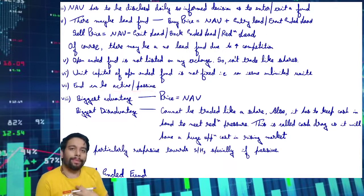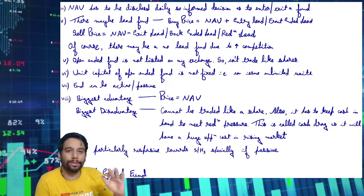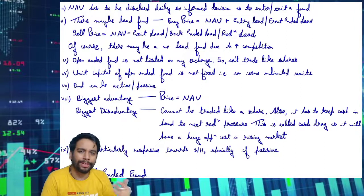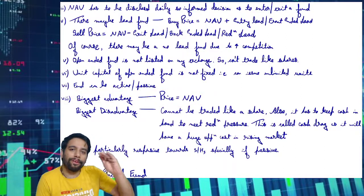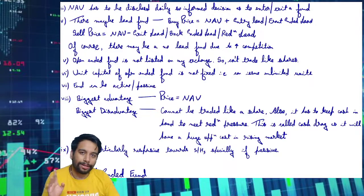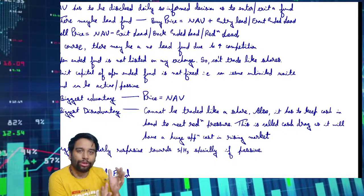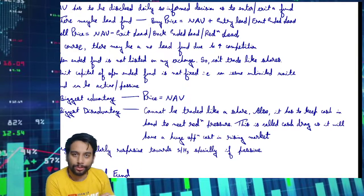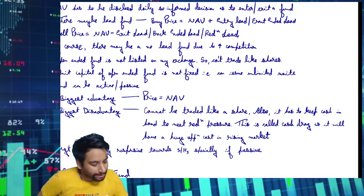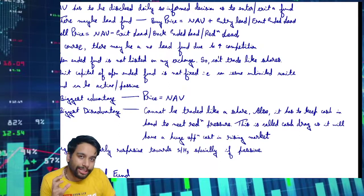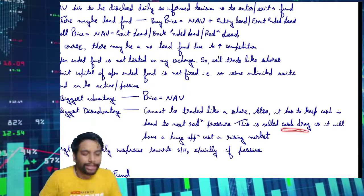Funds can be active or passive. An active manager believes they can time the market — they know when the bottom forms and when the top forms. A passive fund just puts money in Nifty and does a little churning according to weights and rebalancing. Advantage: price is always at fair NAV. Disadvantage: you cannot trade multiple times in a day. Also, the fund has to keep some cash, because if someone wants to redeem their fund, you can't sell all shares for that one person — that would create too much transaction cost. So you need to maintain some cash — that's called cash drag.